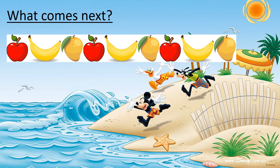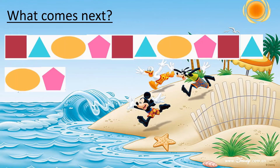What comes next? Here we have a pattern of fruits. The pattern goes: apple, banana, mango, and then it repeats itself. At the end of the pattern we have a mango. We need to find out what fruit comes after the mango. If we go to the start of the pattern, we know that next to the mango is an apple, so the apple is what comes next.